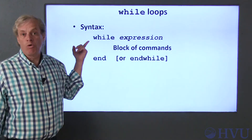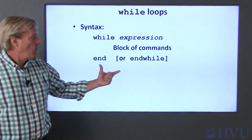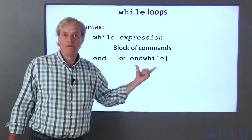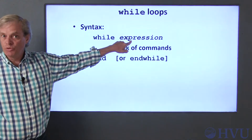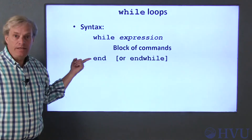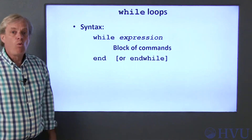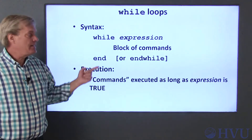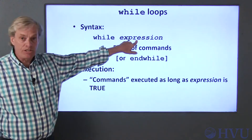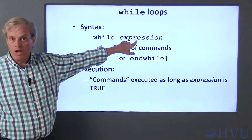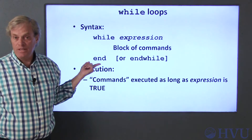This is the general syntax of a while loop. The loop starts with the word 'while' and ends with the word 'end' or 'end while'. The while statement includes an expression which evaluates to either a logical true or false. Between the while and end statements is a block of code to be executed repeatedly. The commands inside the loop are evaluated repeatedly as long as the expression is true. When the expression becomes false, the loop terminates, and execution picks up with the next command after the end statement.